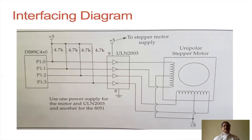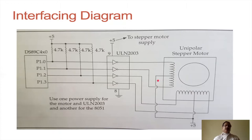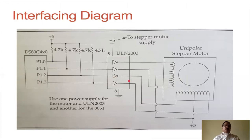Here is the interfacing diagram. Port 1 is used as the output port to output the step sequence. Using the driver ULN2003, it is interfaced with the stepper motor. This is the bifilar winding having a center tap, and the driver is used to isolate the microcontroller from the stepper motor in order to avoid damage or burnout. This driver acts as an isolator between the motor and the microcontroller.